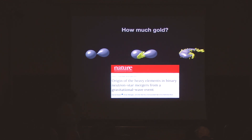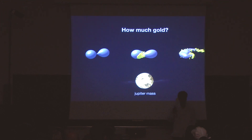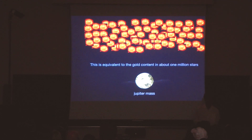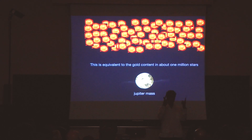In this event, the universe produced about a Jupiter mass of gold. Jupiter has 10 to the 28 grams, and one gram of gold is about $10 — so about 10 to the 29 dollars. This is equivalent to the gold content of about a million stars. Oxygen is formed when one neutron star is made, but for gold you need two neutron stars that remain in a binary and spend hundreds of millions of years dancing before merging — so these are much rarer events. They produce enormous amounts of mass, but from very few events.